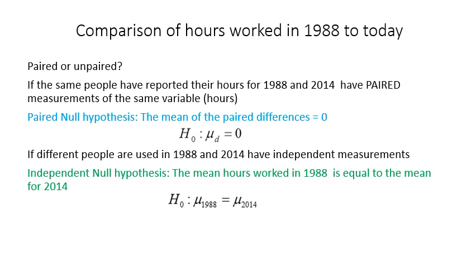Looking carefully at the null hypothesis statements: for a paired t-test, you state that the mean of the paired differences, mu sub d, is equal to zero — there is no difference at all. For an independent samples t-test, you state that the mean in the first group is equal to the mean in the second group — that's the null hypothesis of no difference.